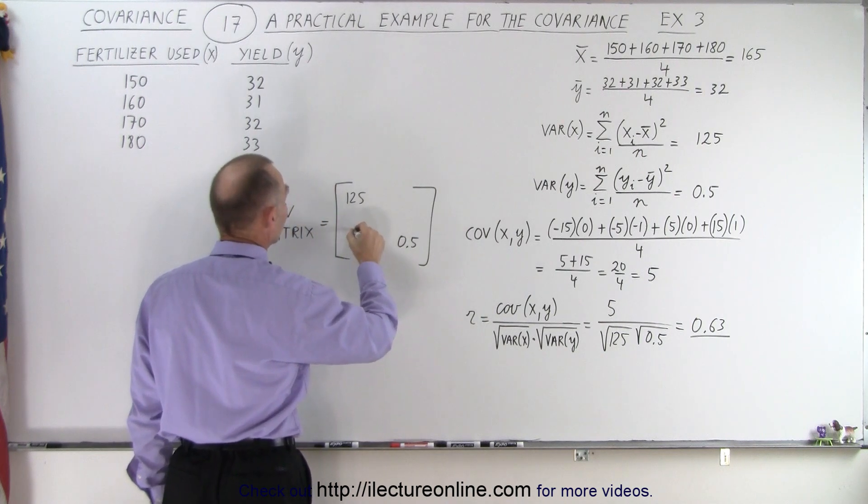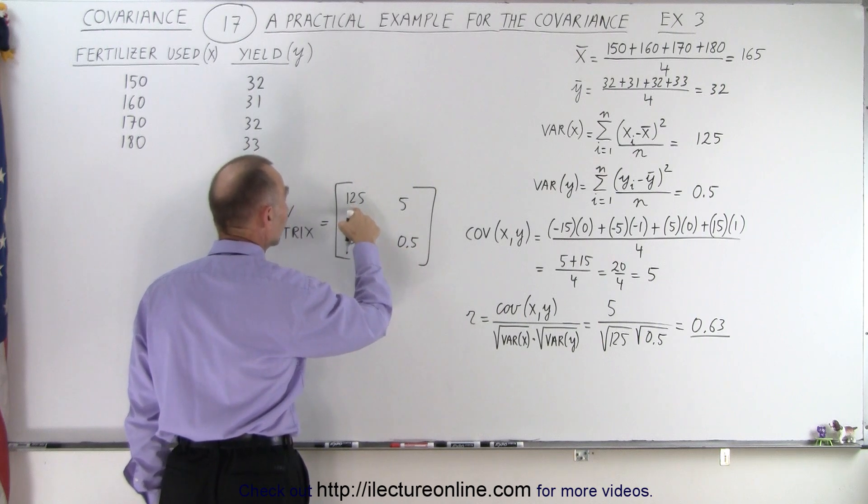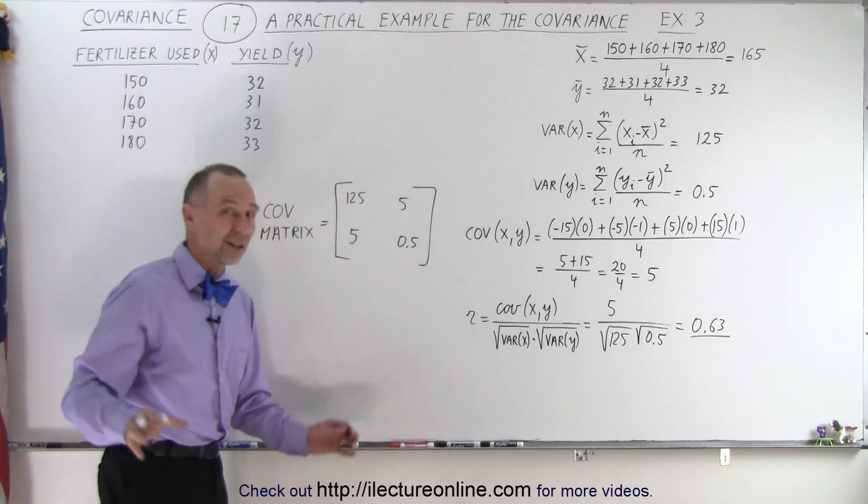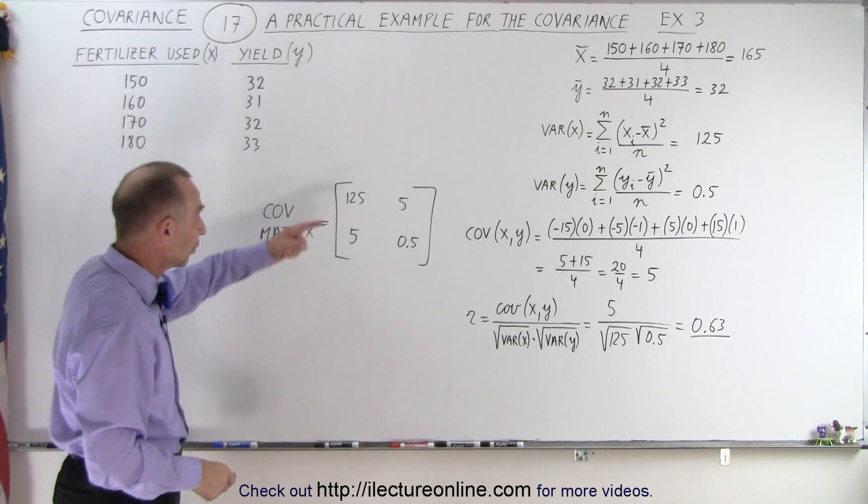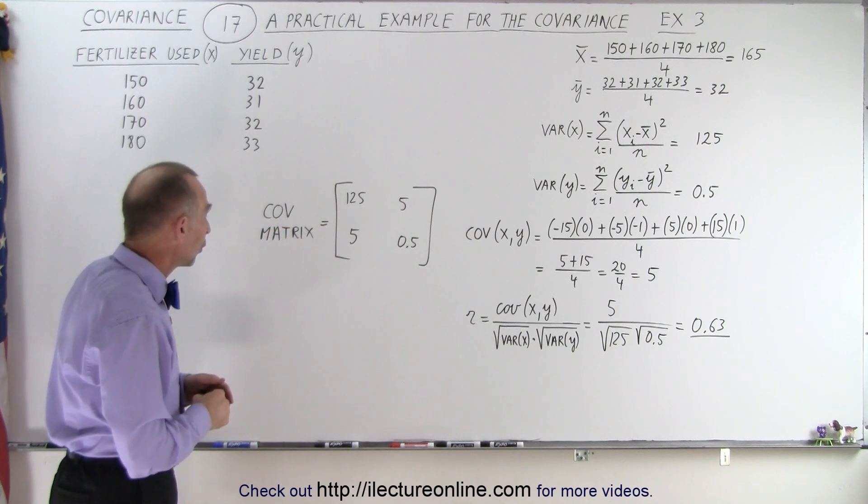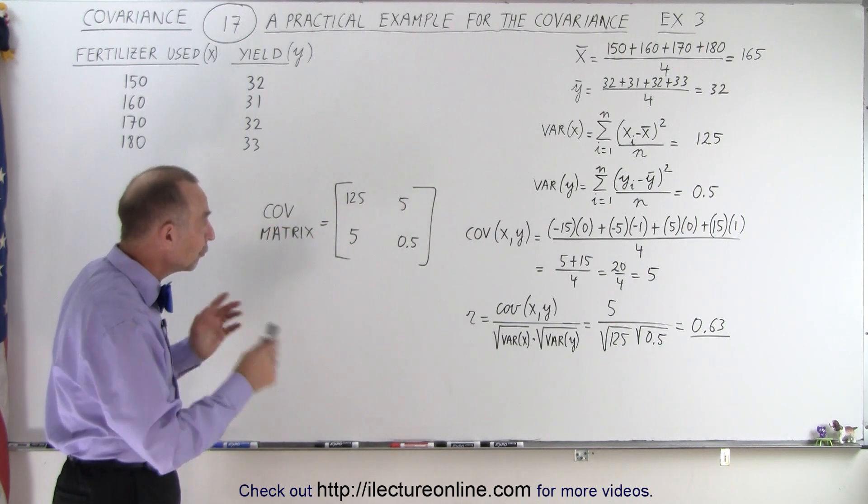When you look at the co-variances, notice we get a 5 and a 5, and that's very tiny, again, in comparison to the large number 125. A lot of variation in the fertilizer used, there's a very small correlation between the two variables.